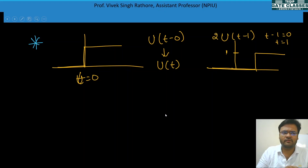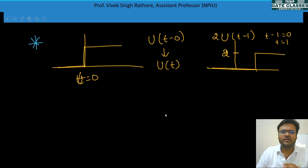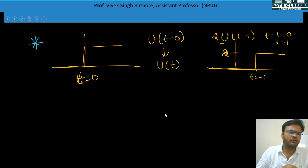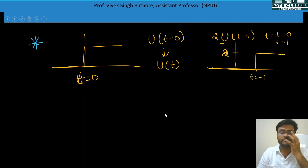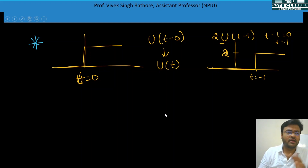If the step change is 2·u(t − 1), the step size becomes 2. Similarly, for u(t + 1), the step change occurs at t = −1 — this is how time shifting works on u(t).